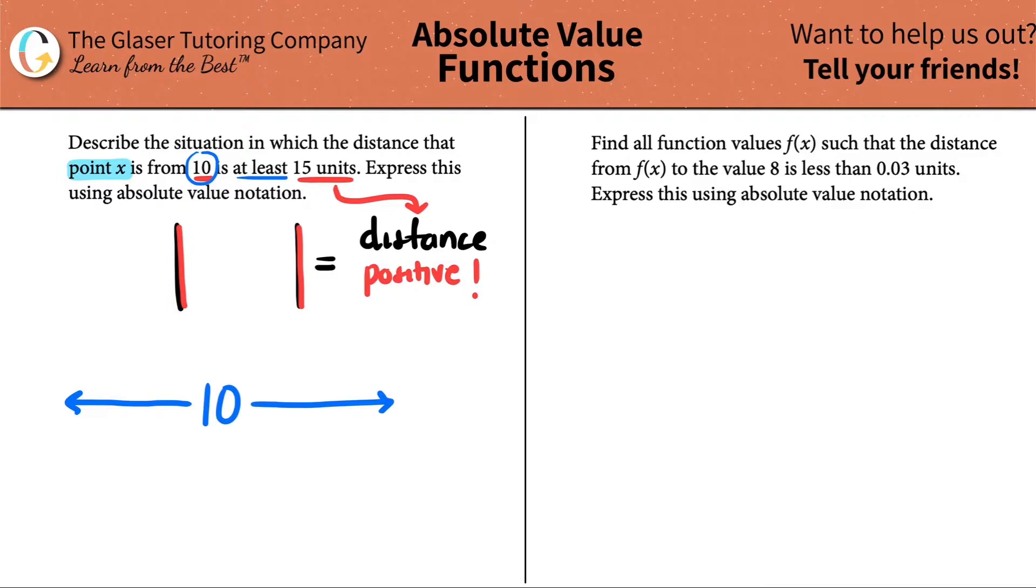So technically, I can go 15 to the right, and I can plus 15, that would get me 25. But I can go to the left, if we look at it on a number line, and that would be minus 15.